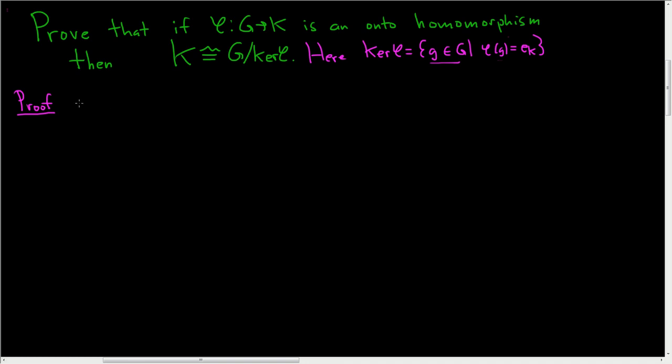So first we have to come up with something. For notation, so I don't have to keep writing ker φ, set H equal to the kernel of φ. And now we're going to define our function, so define ψ and we'll go from G mod H, so G mod the kernel into K by, ψ takes a right coset, which we'll call HX, and sends it to φ(x).